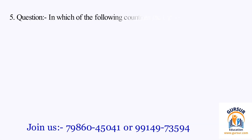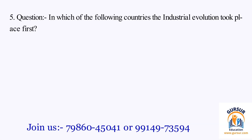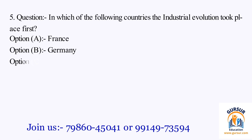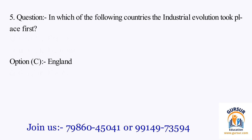Question number 5. In which of the following countries did the industrial revolution take place first? The option A is France. The option B is Germany. The option C is England. The option D is USA. The right answer of the question is Option C, that is England.